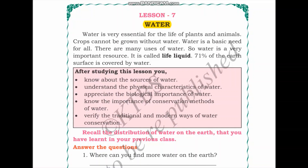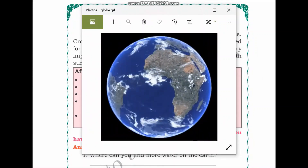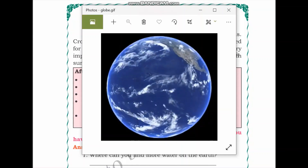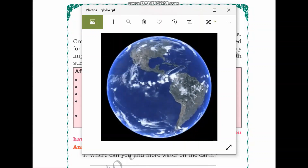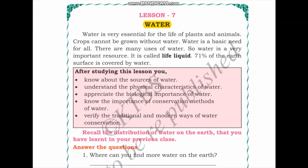Water is a very important resource and is called the life liquid. 71 percent of the earth's surface is covered by water. Looking at this image of the earth's surface, you can notice that there are a lot of areas that are blue in color, which corresponds to water-covered areas. That is why a major portion — 71 percent — of the earth's surface is covered with water.